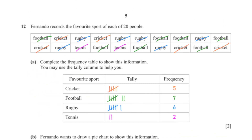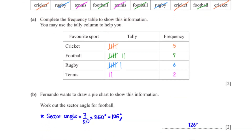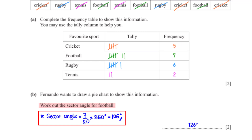Fernando records the favourite sport of each of 20 people. Complete the frequency table: cricket is 5, football is 7, rugby is 6, tennis is 2. Fernando wants to draw a pie chart; work out the sector angle for football. We divide 7 by 20 and multiply by 360 degrees, giving 126 degrees.